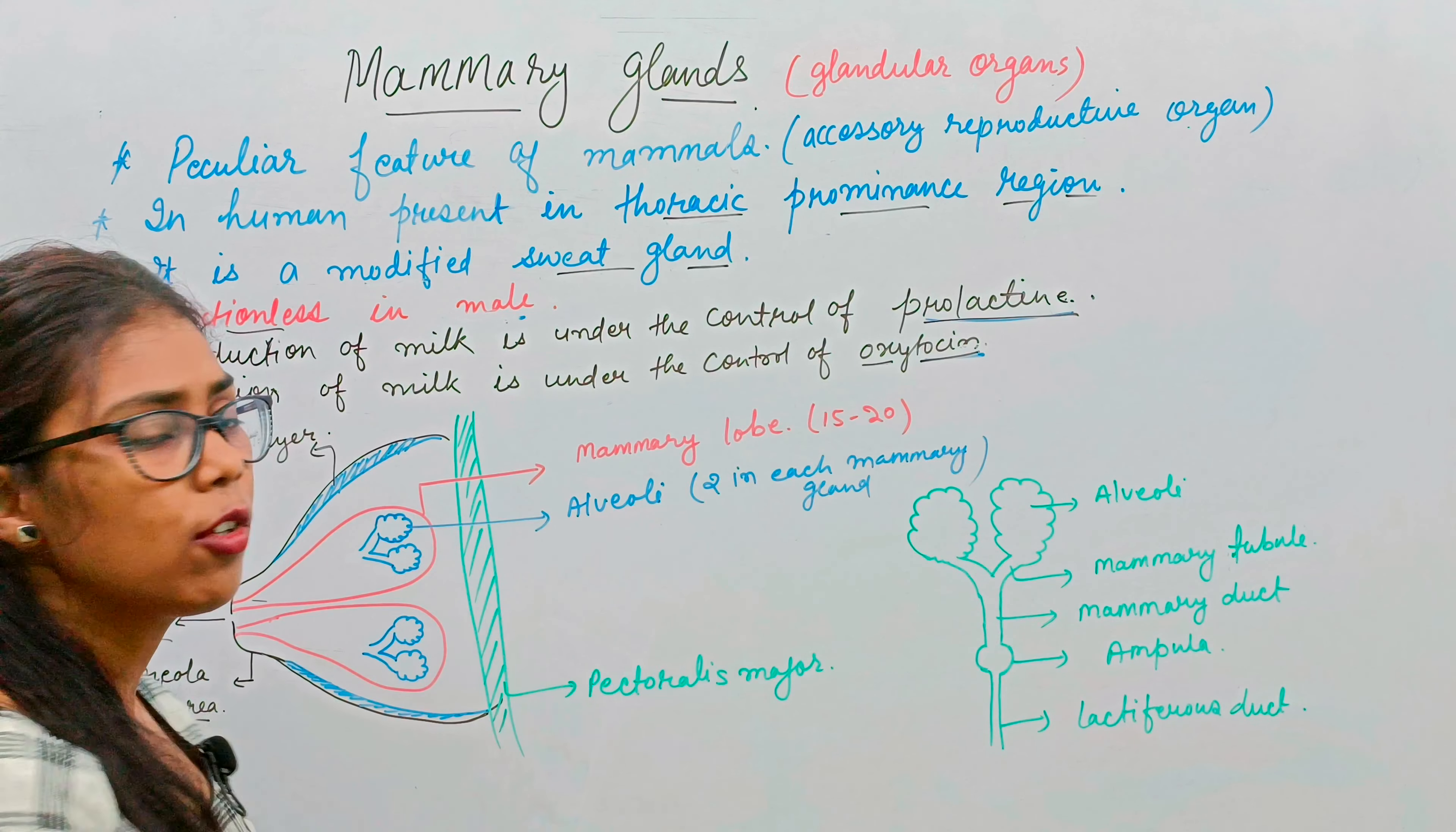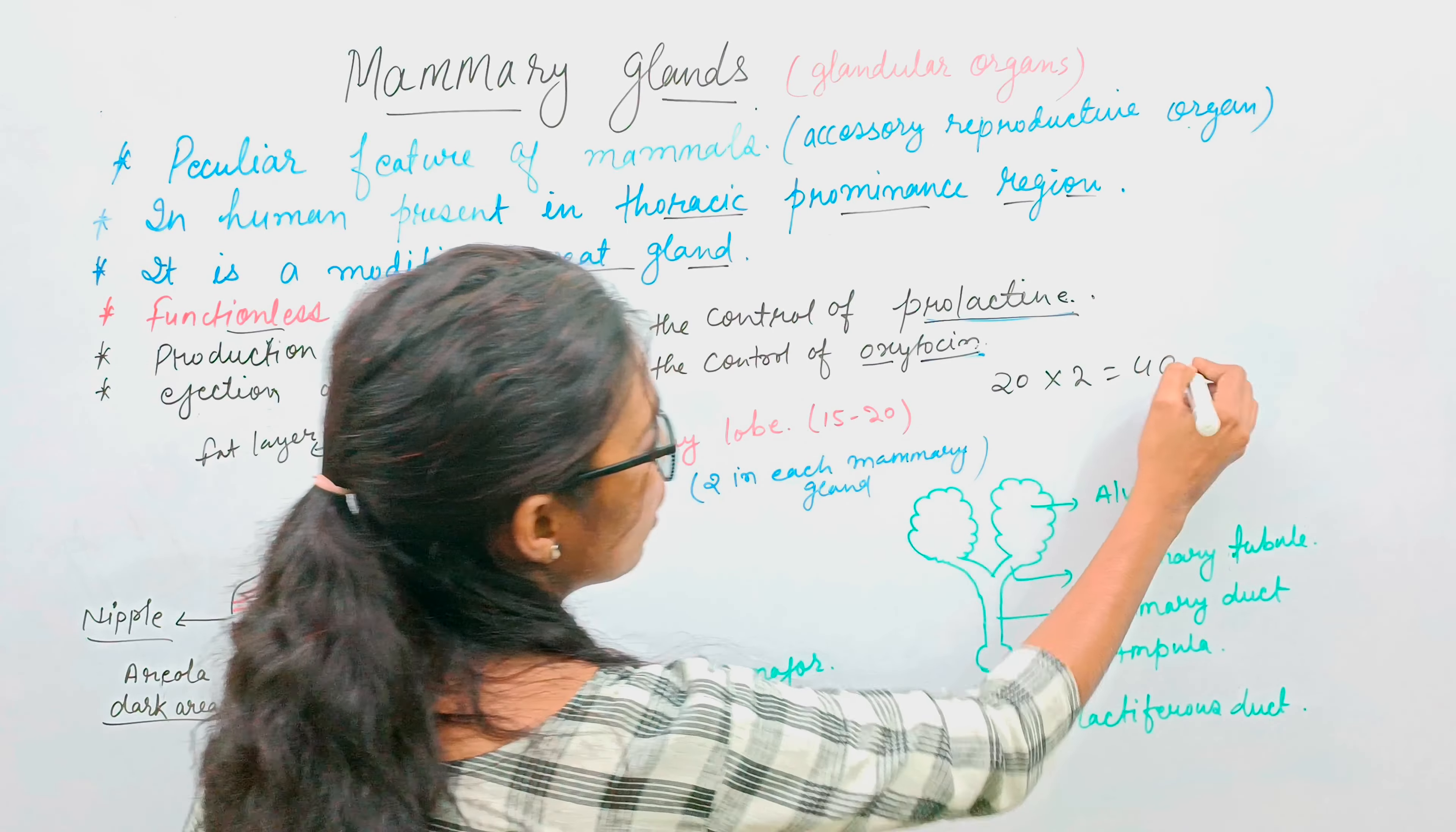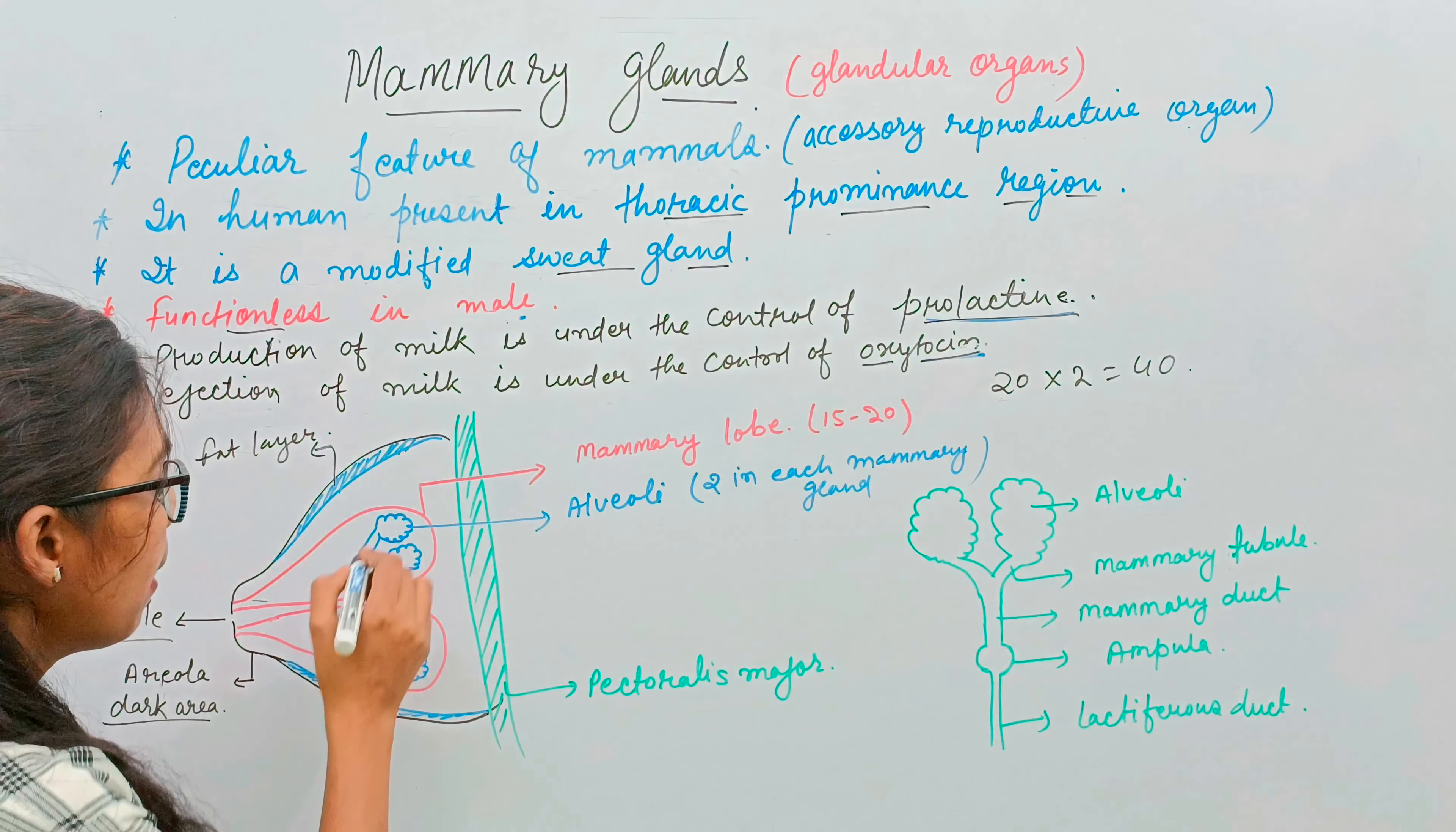How many alveoli are present in the mammary lobe? 20 into 2 is equal to 40. In every mammary gland, 40 alveoli are present.